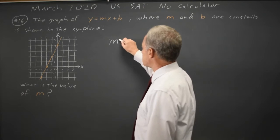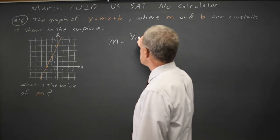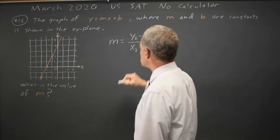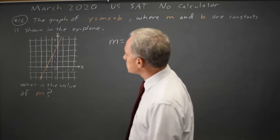Our formula for m, the standard symbol for slope, is y2 minus y1 over x2 minus x1. So if I choose two points on this line...